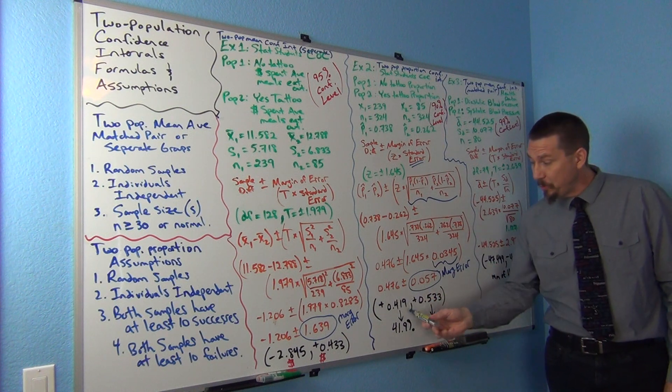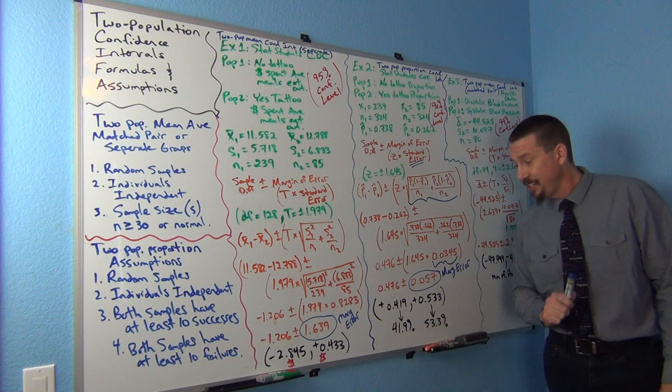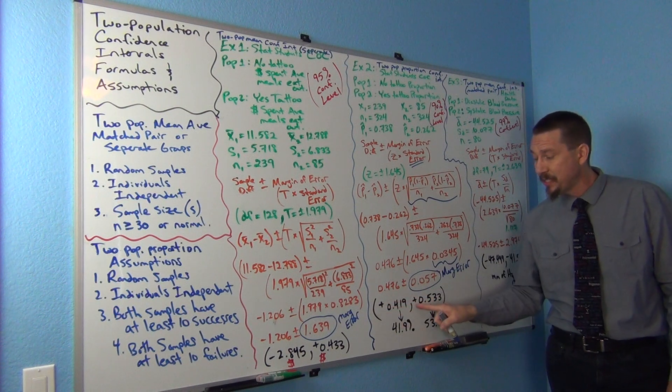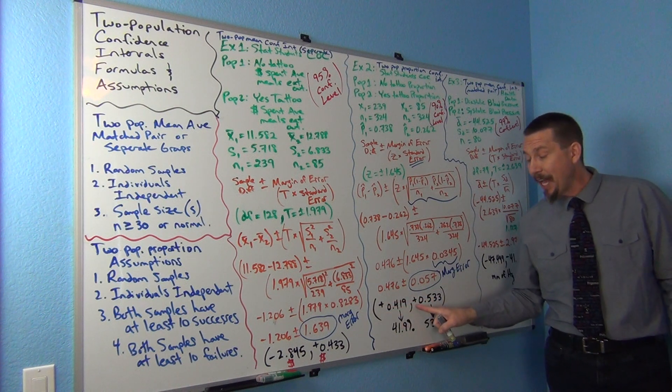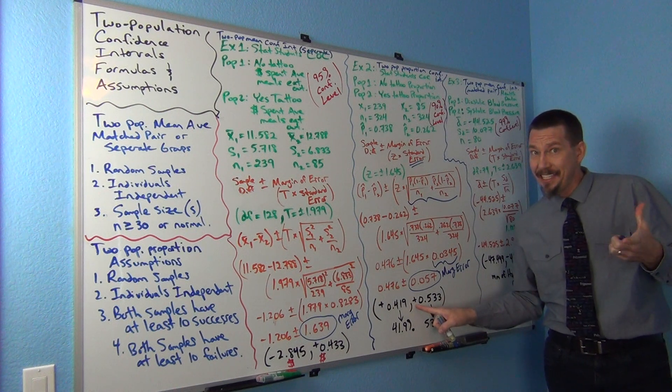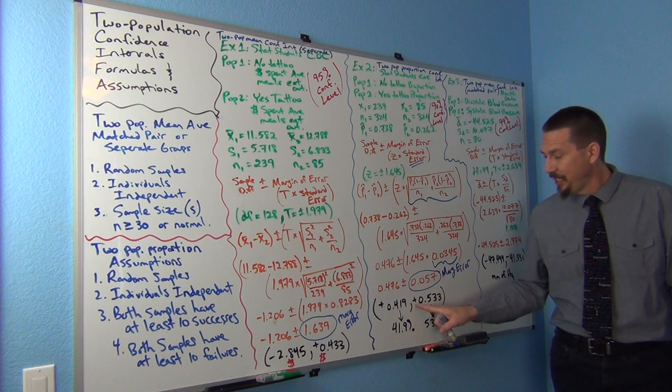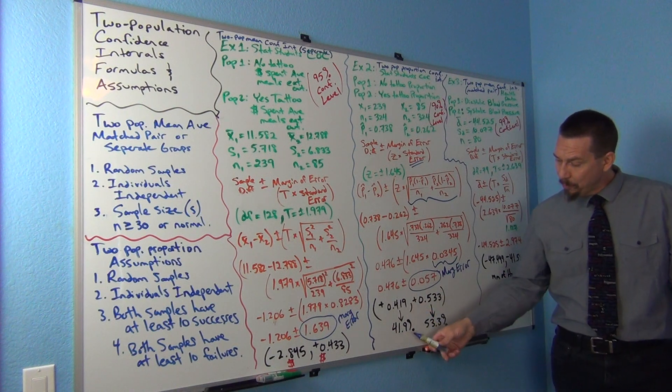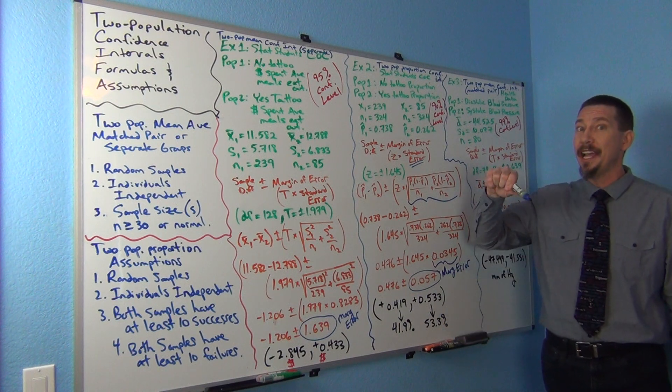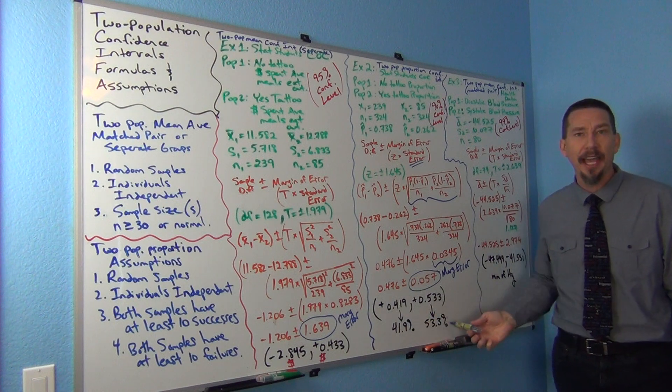Well, we learned last time that when a two population confidence interval is positive, positive, notice both of these are positive. By the way, you don't have to write these little positive signs. The computer won't. But I do, because two population confidence intervals, it's all about the signs. Negative, negative, positive, positive, negative, positive, right? We learned that from the last video. So positive, positive, if you remember, tells us that population 1 is actually higher than population 2, and it's between these two numbers higher.